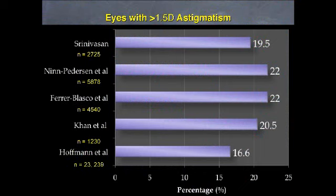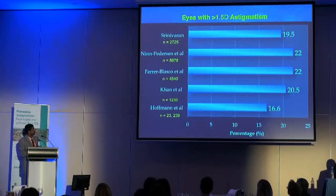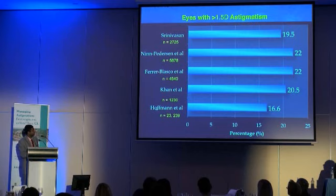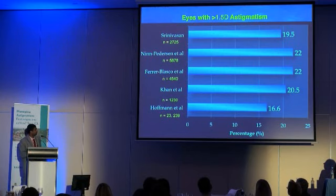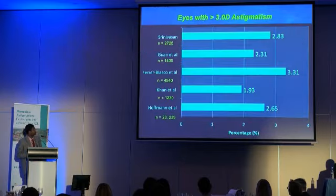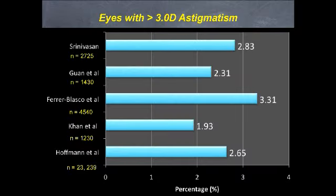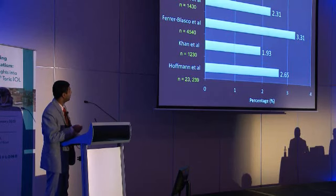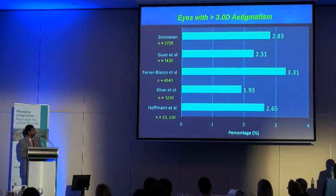Looking at all the studies published so far, we are looking at the percentage of patients who have had more than 1.5 diopters of corneal astigmatism. Hoffman's paper from Germany has the biggest number with about 24,000 eyes, and other studies are closely around 5,000 to 6,000. There is pretty much consistency in these results - about 20 to 21 percent of patients have more than 1.5 diopters of pre-existing corneal astigmatism. If you look at much higher astigmatism, like more than 3 diopters, our group is approaching around 2.85 percent, and the remaining published studies are looking at about 3 percent.